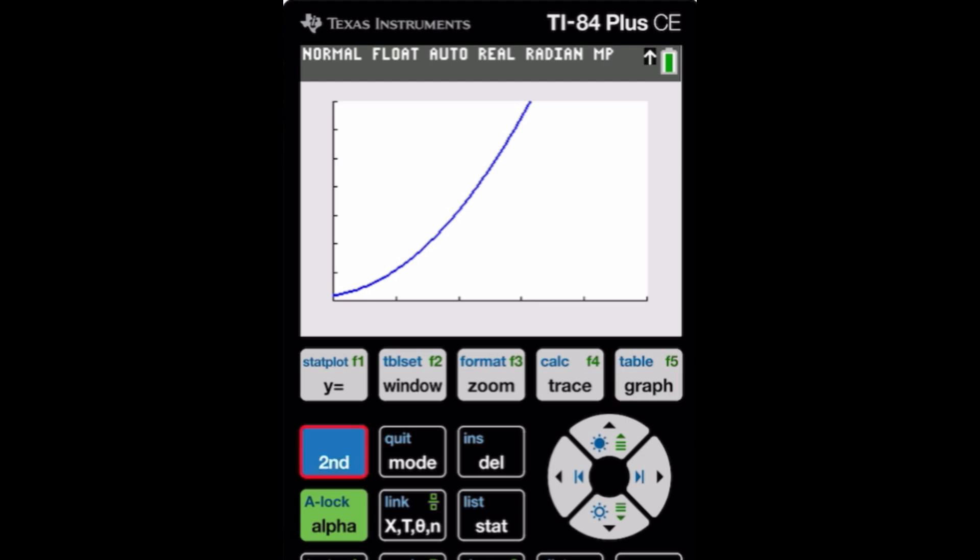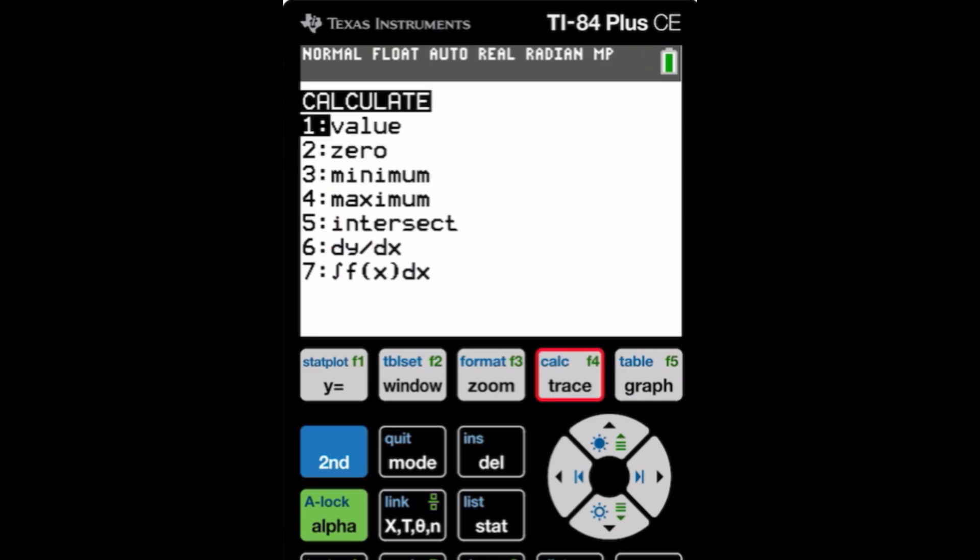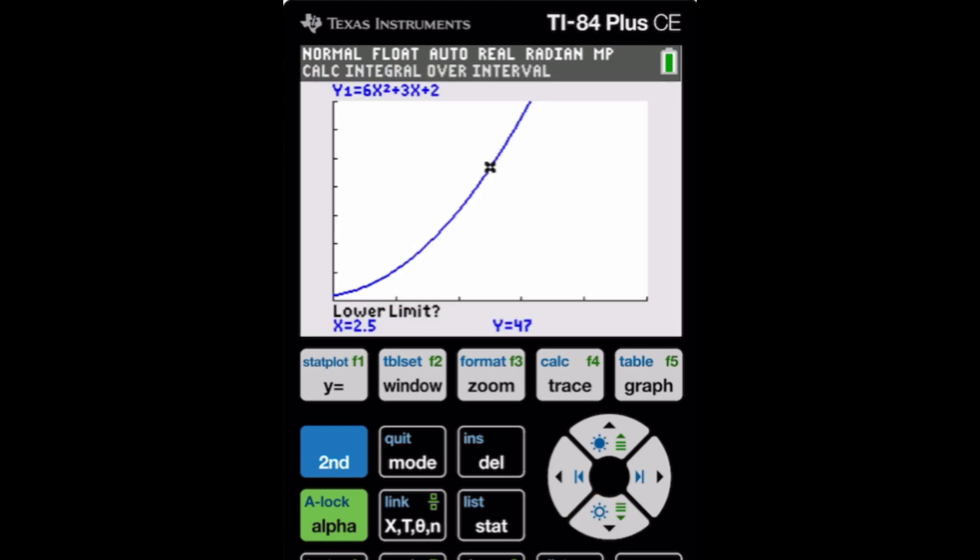To find the area under the curve we're going to go ahead and go to second trace which is calculate. We're going to go ahead and choose option 7 which is to find the integral. It's going to ask us for the lower limit. In this case the lower limit was 1 because we're integrating from 1 to 3. Press enter. Then my upper limit is 3. Press enter again and notice the calculator has shaded for us the area that we are looking for which is the area in the interval from 1 to 3 bounded by the x-axis with respect to x and notice it gave us the answer of 68 which is exactly what we got when we did this the long way by finding the antiderivative and substituting the upper bound and the lower bound.